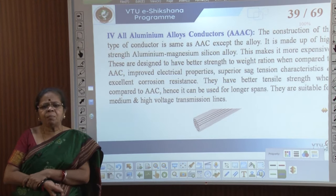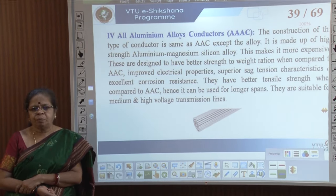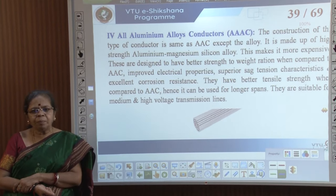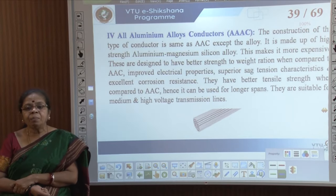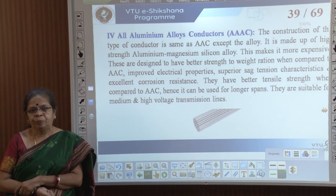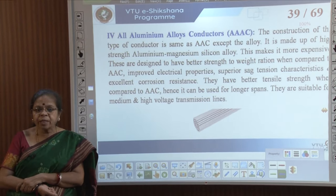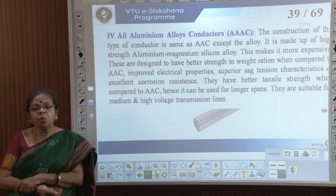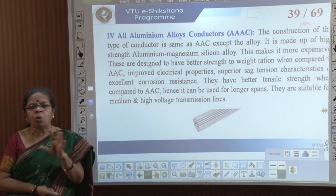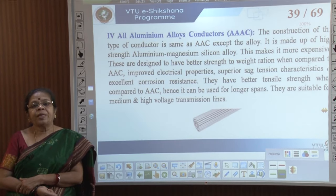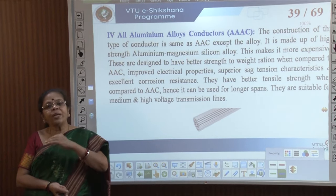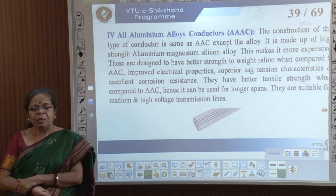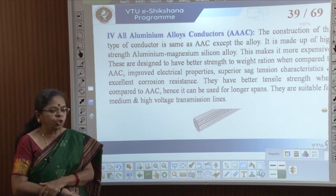Next, All Aluminium Alloy Conductors, or AAAC, are similar to AAC except the alloy used is a high aluminium-magnesium-silicon alloy. It is more expensive but can be designed to have a better strength-to-weight ratio than all aluminium conductors. It has improved electrical properties and reduced sag compared to pure aluminium, so it can be used for longer spans and is suitable for medium and high voltage lines.